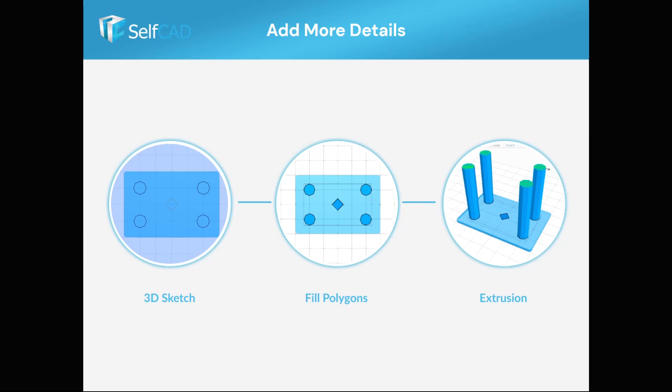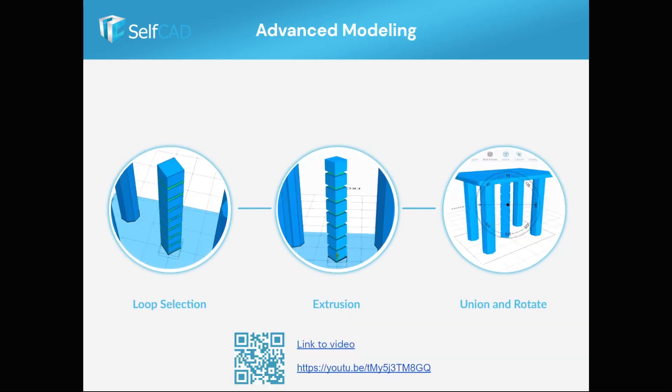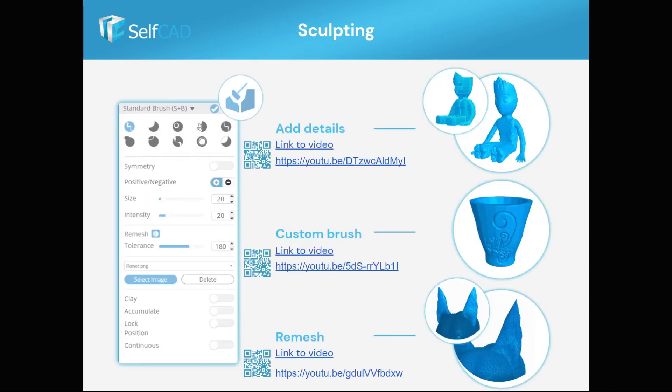In this example, you can see how to use drawing on top of objects and to create the needed topology by extruding with macros, and how to use advanced selection and advanced settings in extrusion to create nice table legs and shapes with very little effort.